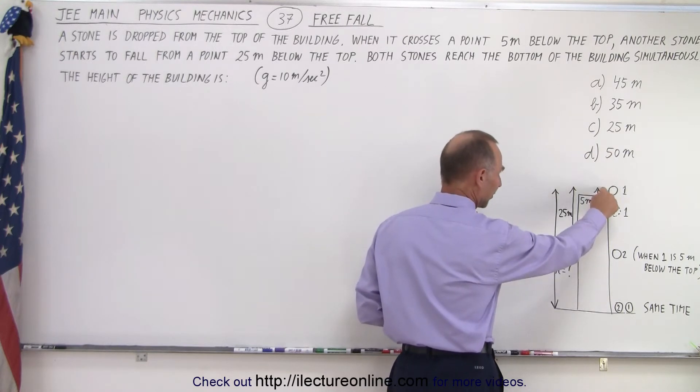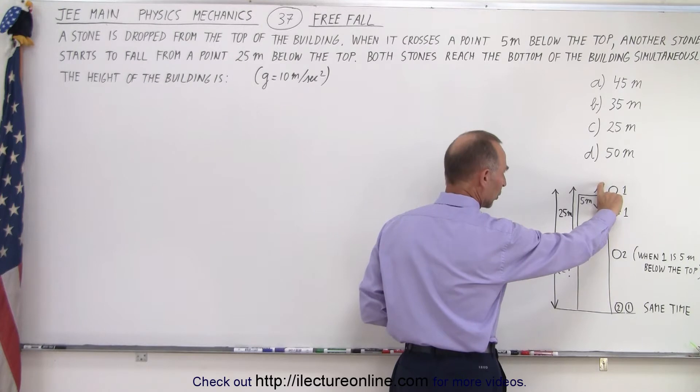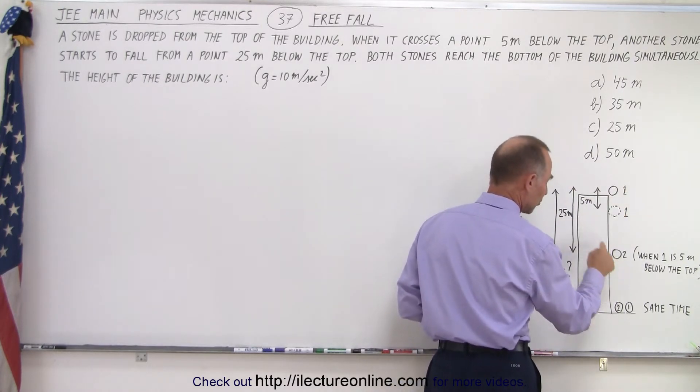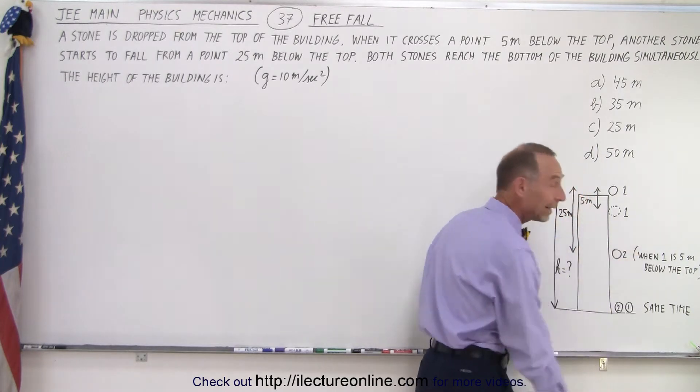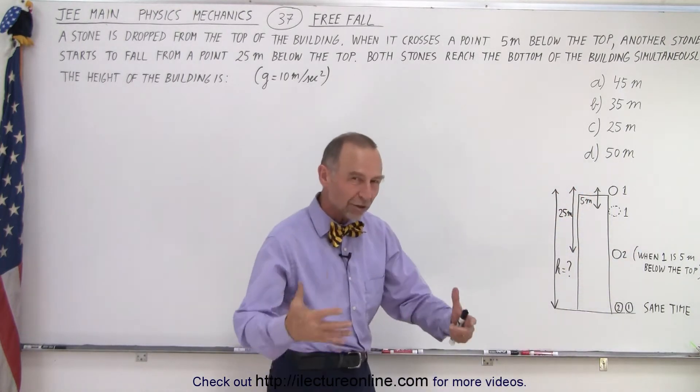And we drop a stone from the very top. And when it reaches a point 5 meters below the top, so when it's dropped 5 meters, a second stone is dropped 25 meters below the top, and both stones hit the ground at the same time. What is the height of the building?